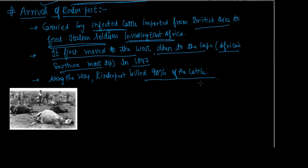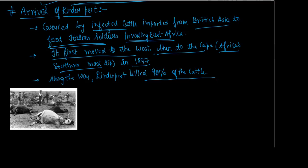Rinderpest killed 90% of the cattle. Because of this, people were virtually forced to take up wage labor as their animals had died. The majority of animals died because of the rinderpest virus. It was the Europeans — knowingly or unknowingly — who had brought it. Ultimately it benefited them, while causing complete ruin for the local people.